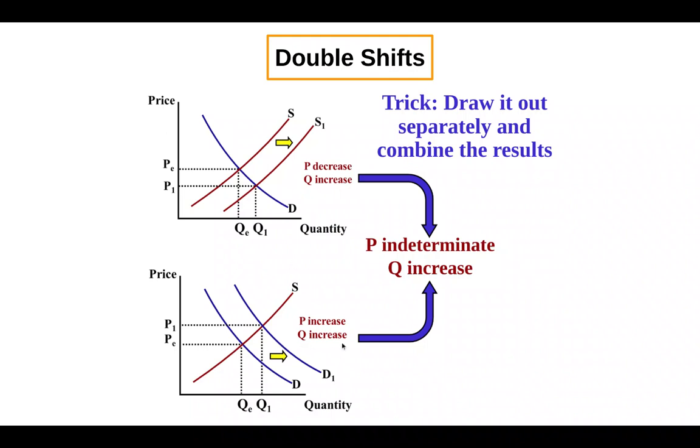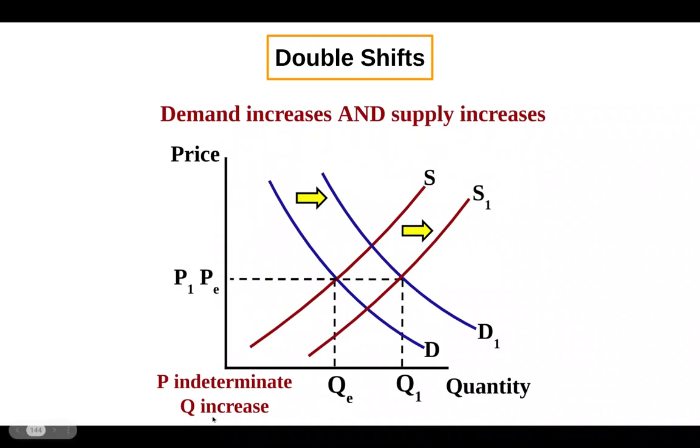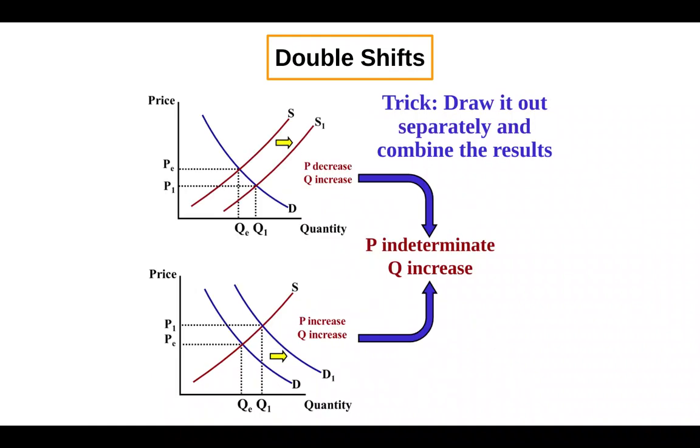Which is why we said for our answer to this question about the double shift, we know the quantity is increasing. However, notice that when supply shifts to the right and demand shifts to the right, they put opposite pressures on the price. The supply shift is resulting in a lower price, and demand, the demand shift to the right is resulting in a higher price. And so that is why the price change is indeterminate because we don't know which effect is greater, this price decrease or this price increase. And so one trick when you're given a double shift is to draw each change separately and then combine the results to see what happens.